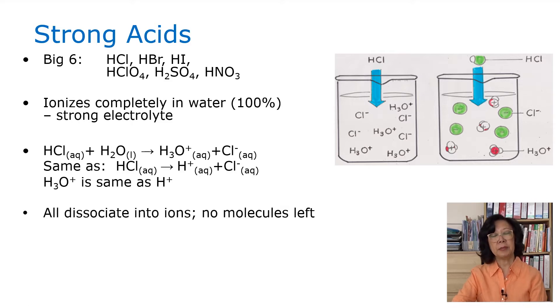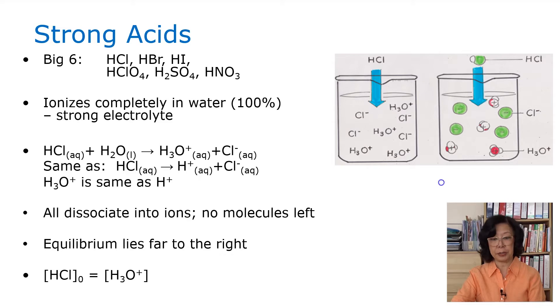If we look at the pictures of the beakers, we find that the hydronium and chloride ions are floating around in the beaker. All the molecules have dissociated and equilibrium lies far to the right. The initial concentration of hydrochloric acid is therefore equal to the concentration of the hydronium ions.